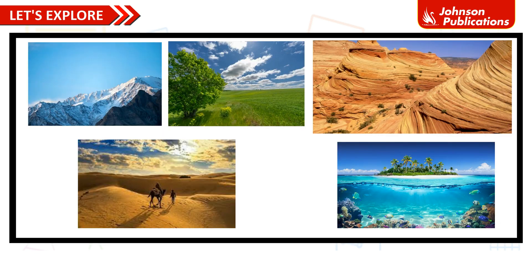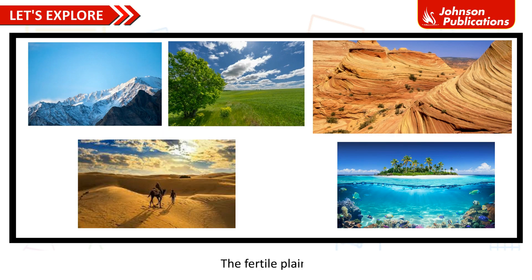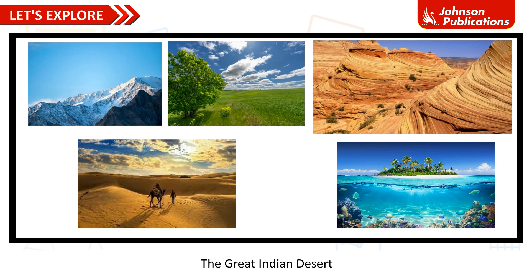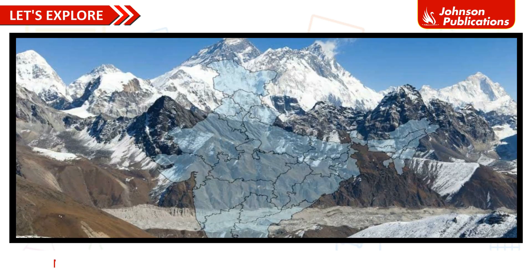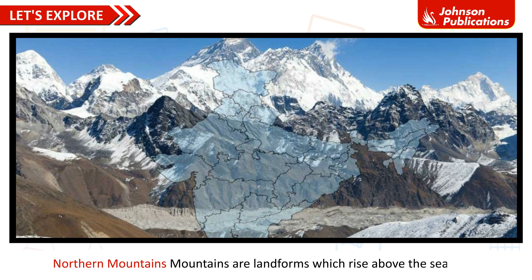The major landforms of India are: the Northern Mountains, the fertile plains, the plateaus, the Great Indian Desert, and the islands. Mountains are landforms which rise above the sea level.